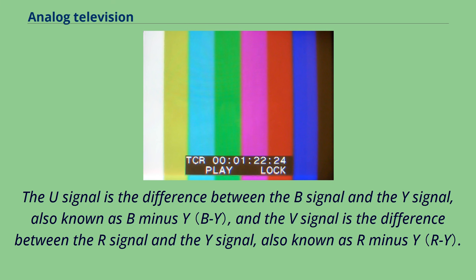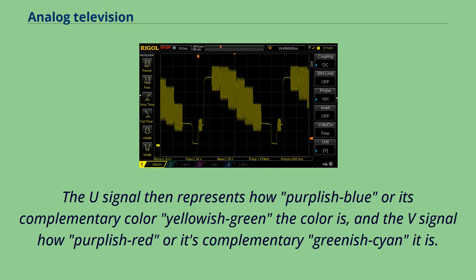The advantage of this scheme is that the U and V signals are zero when the picture has no color content. Since the human eye is more sensitive to detail in luminance than in color, the U and V signals can be transmitted in a relatively lossy way with acceptable results.